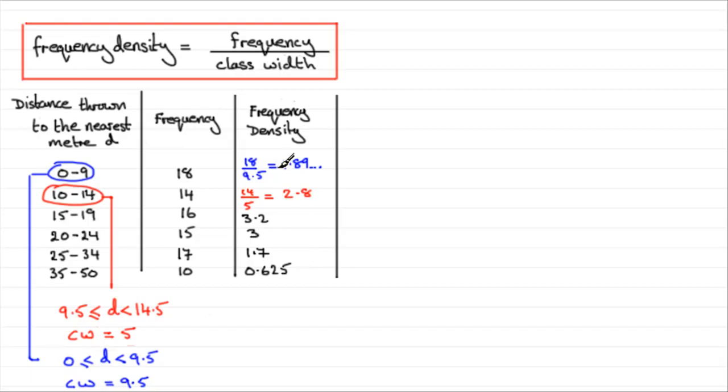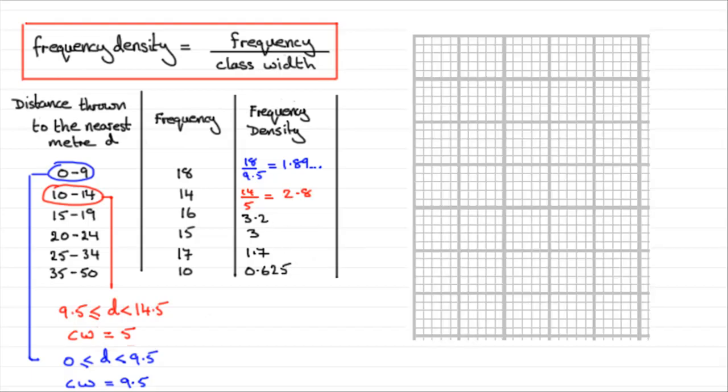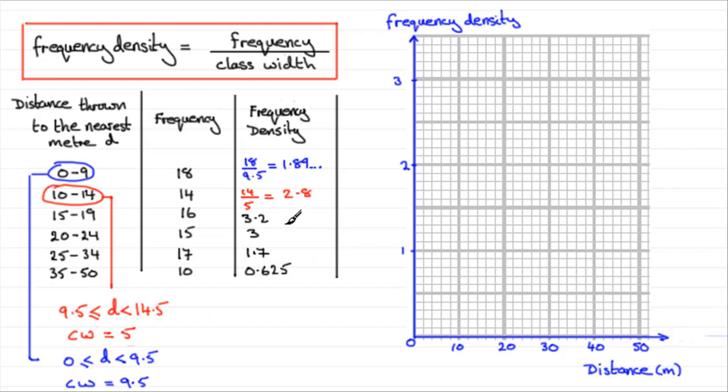Now that we've got our frequency density values worked out, what we need to do is plot the histogram. And so we take a bit of graph paper, put some axes on, and we've got on the vertical axis frequency density. You can see it goes up to 3.2, so my scale here goes up to 3.5. Don't forget to label your vertical axis the frequency density. Now on the horizontal axis here I've got the distance measured in meters. Don't forget to label your scales.